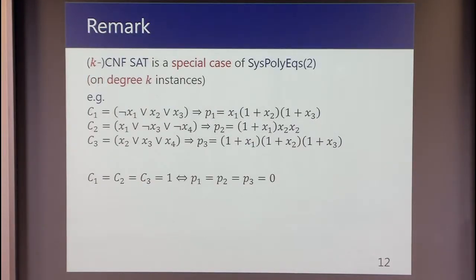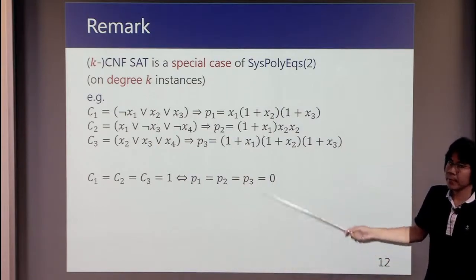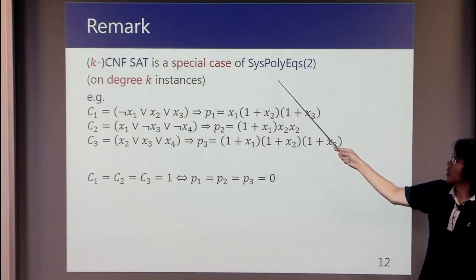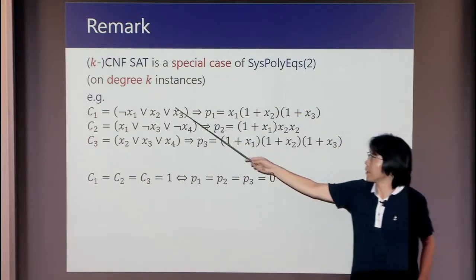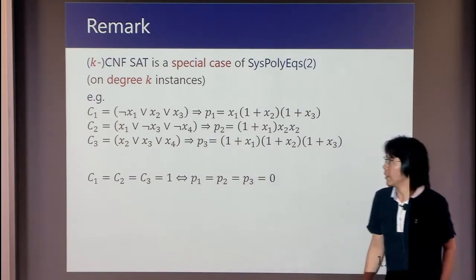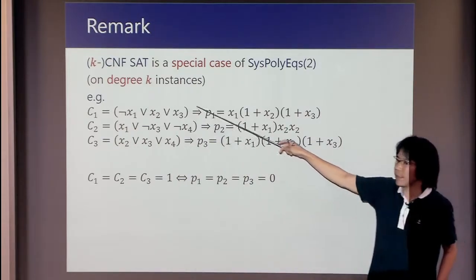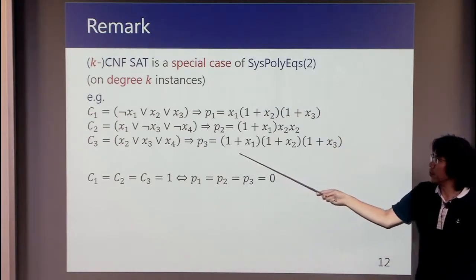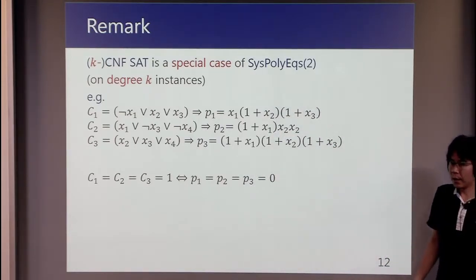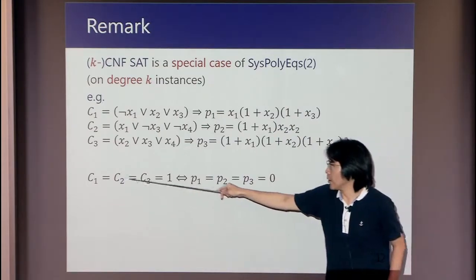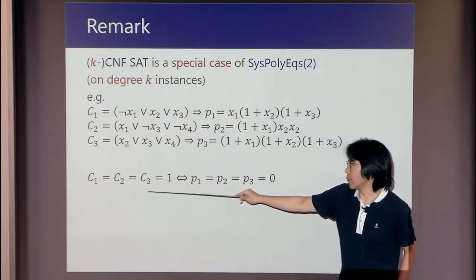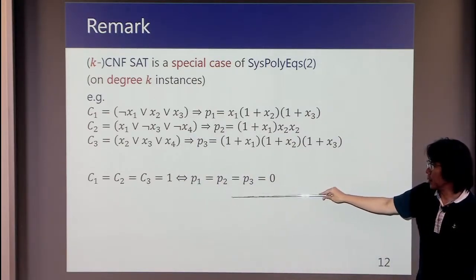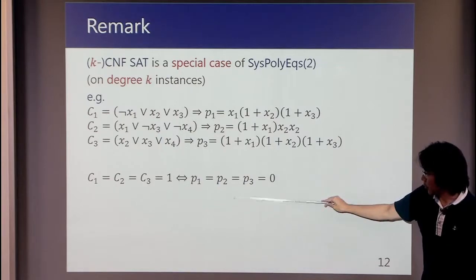I would like to remark that k-CNF-SAT is a special case of SysPolyEqs(2) on degree k instances. You can see these three clauses can be represented as polynomials. The condition that these clauses are satisfied is equivalent to the conditions that these polynomials are simultaneously zero.